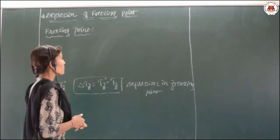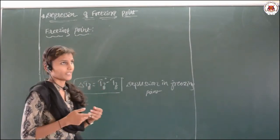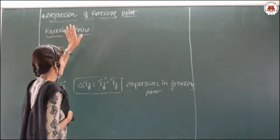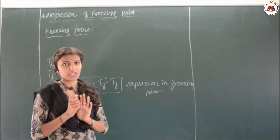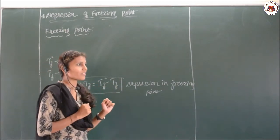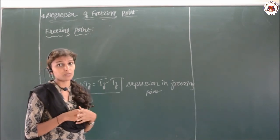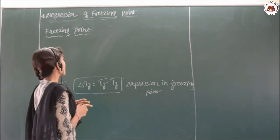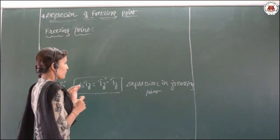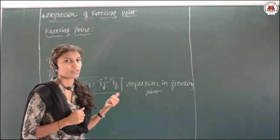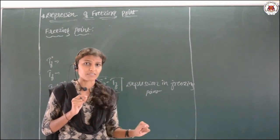Welcome to the chemistry class. Today we are going to discuss one more colligative property: depression of freezing point. Depression means decrease. In the last class we discussed elevation of the boiling point — there the boiling point increases, while here the freezing point decreases. The depression of freezing point also depends upon the number of solute particles, irrespective of their nature.